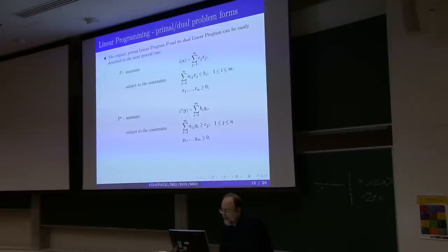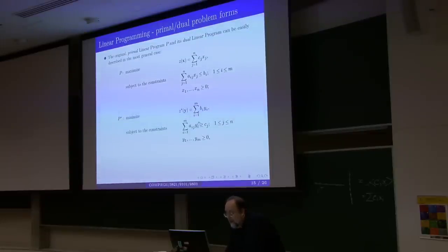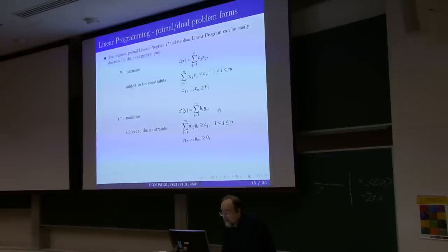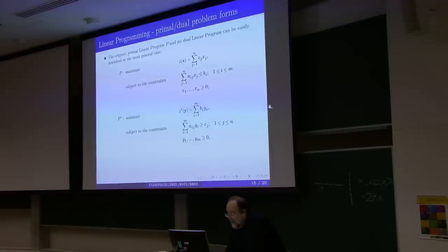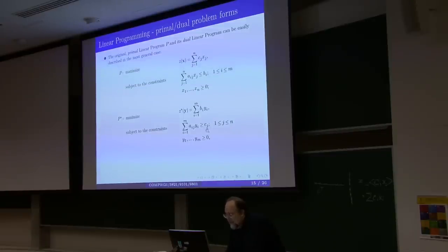And vice versa, the coefficients of the original problem become bounds in the dual problem. Because we always want to make sure that the linear combination of these new parameters Y exceeds or equals C_j, so that you can use this objective to bound the original objective. So the coefficients in the original objective become the bounds for the constraints, and the bounds for the constraints in the original problem become the coefficients of the dual objective.